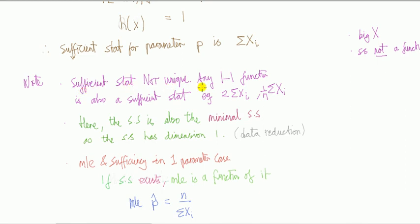Right, so sufficient statistic we know is not unique because any one-to-one function is also a sufficient statistic. For example, times this guy here by any non-zero number like 2, that's a sufficient statistic. Times it by 1 over n, that's also a sufficient statistic, and you can recognize this is the sample mean, it's x bar.